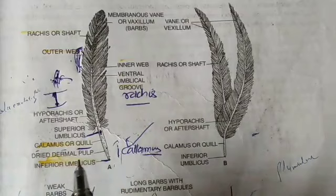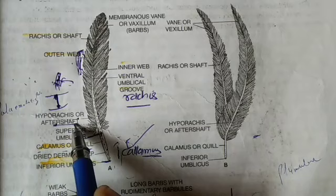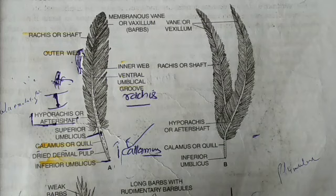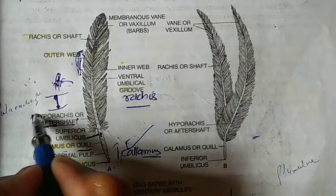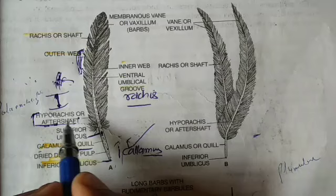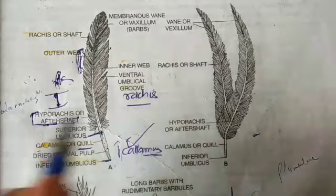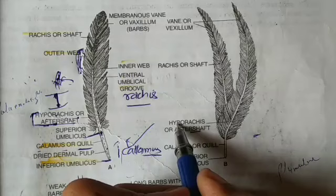One important term is hyporachis, also called aftershaft or after feather. This is a slightly confusing term. What happens in some birds is that at the superior umbilicus — the junction of the rachis and the quill — a small feather-like structure grows out, like a valve. That rachis of this accessory structure is called the hyporachis or aftershaft. So in that bird, another feather grows from the same point — that is called the aftershaft or hyporachis. Do not confuse it with a separate feather.